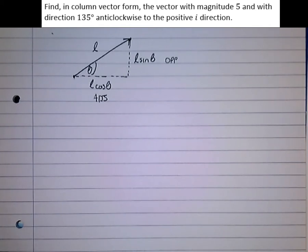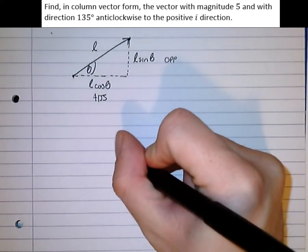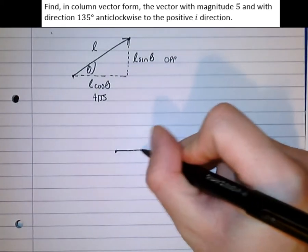Finding column vector form, the vector with magnitude 5 and with direction 135 degrees anticlockwise to the positive i direction. So let's take our origin to be here, and there's our positive i direction.